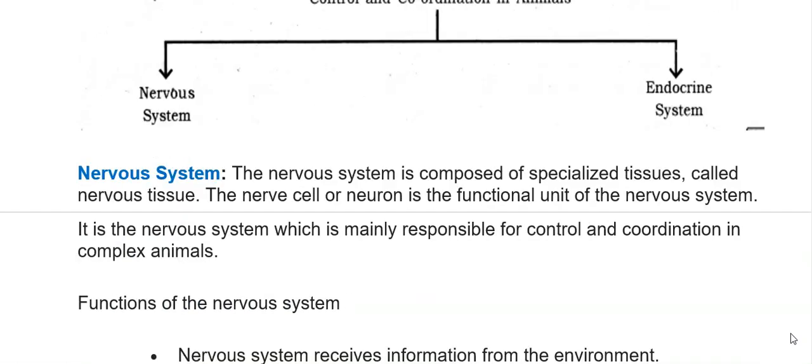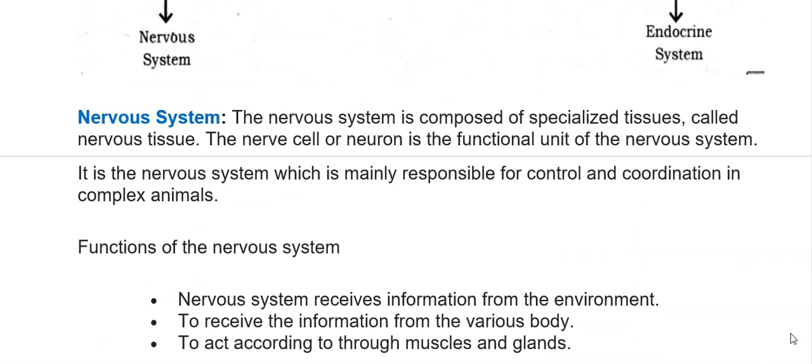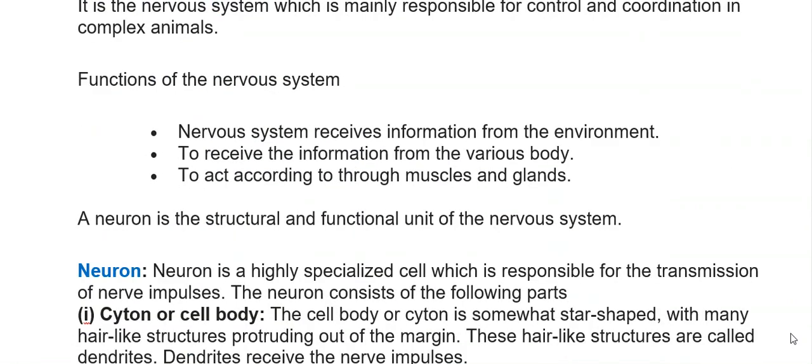The nervous system is composed of specialized tissues called nervous tissue. The nerve cell, or neuron, is the functional unit of the nervous system. It is the nervous system which is mainly responsible for control and coordination in complex animals. The nervous system receives information from the environment and signals muscles and glands to act accordingly. The neuron is the structural and functional unit of the nervous system.